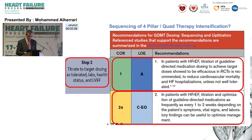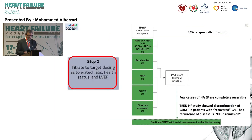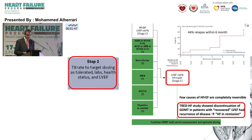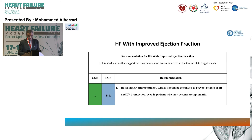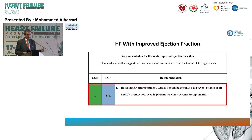As part of Step 2, the guidelines highlight patients who improve their ejection fraction. The TRED-HF trial took patients with improved ejection fraction and no symptoms, split them into a group continuing guideline-directed medical therapy and a group gradually weaned off treatment. Forty-four percent of those weaned off relapsed within six months — developing symptoms, worsening ejection fraction, or rising natriuretic peptide. Therefore it is now a Class 1 recommendation to continue guideline-directed medical therapy for patients with improved ejection fraction.